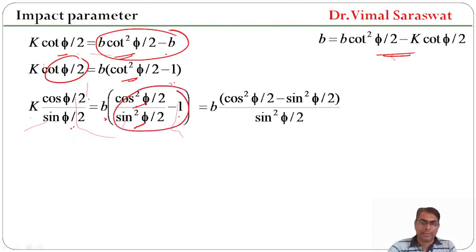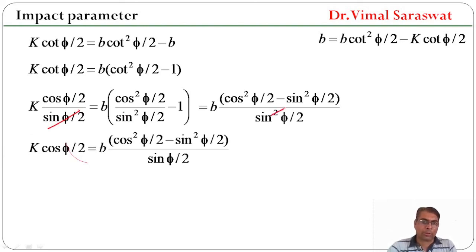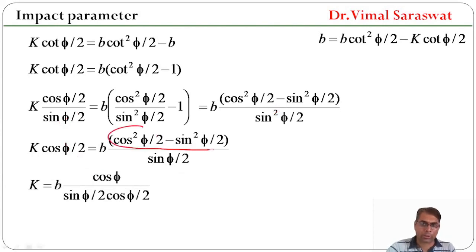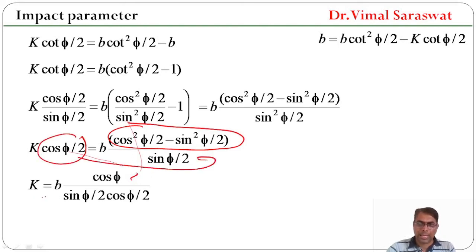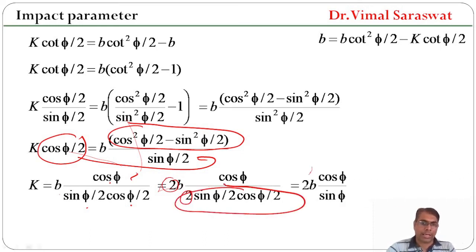Replacing cot(φ/2) with cos(φ/2)/sin(φ/2): k·cos(φ/2)/sin(φ/2) = b·(cos(φ/2) − sin(φ/2))/sin(φ/2). The sin(φ/2) terms cancel, giving k·cos(φ/2) = b·(cos(φ/2) − sin(φ/2))/sin(φ/2). Since cos(φ/2) − sin(φ/2) = cos φ (using double angle), and multiplying and dividing by 2: k = 2b·cos φ / sin φ = 2b·cot φ. So k = 2b·cot φ.